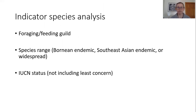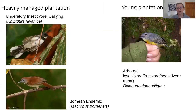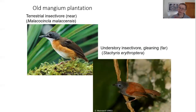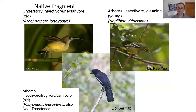We also looked at indicator species to characterize the different forest types, including their feeding guild, how widely ranging they were, and their IUCN threat status. A few species found predominantly in more intensively managed plantations were generalist species — these are species frequently found in urban and suburban environments. Interestingly, a couple of species indicated old Acacia mangium plantation, and these were understory insectivores, which have been shown to be particularly sensitive to fragmentation and logging — making it an interesting finding to find them in good numbers there.